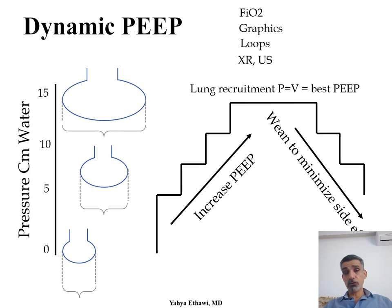Once I achieve that — what I call the lung recruitment point — I start to wean. When I wean, let's say I reached 12, I go 11, 10. If there is deterioration of those parameters, I know 11 is the best PEEP for that baby. If no deterioration, I go back to 9, 8, and then I know the best PEEP, or dynamic PEEP, for that baby.